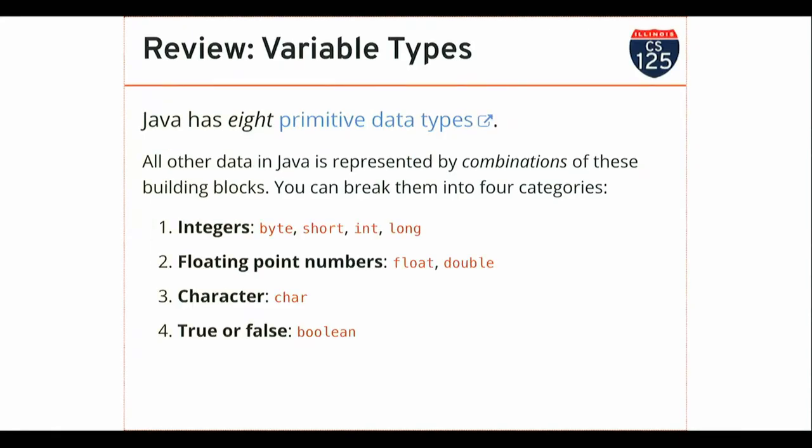So just a quick review from last time. We introduced Java's eight primitive types. These are the basic building blocks of all the more complex data structures and different ways of storing information that we'll talk about later. But to begin with, we're starting with the basics — these are the atoms in terms of data in Java, things you can't break down any further.